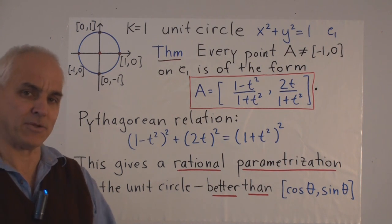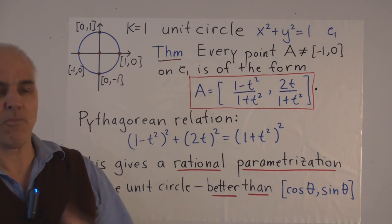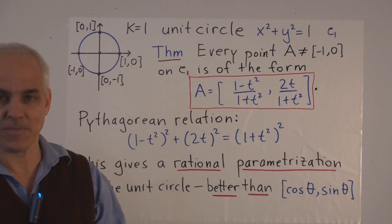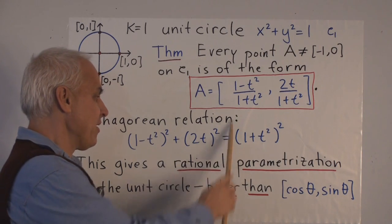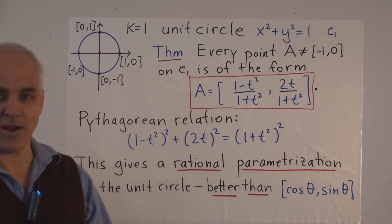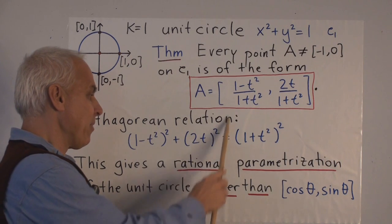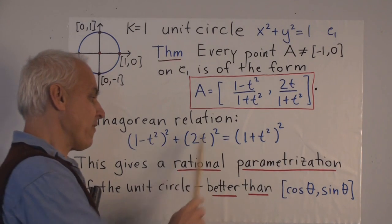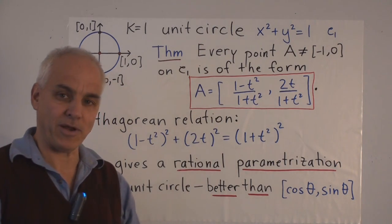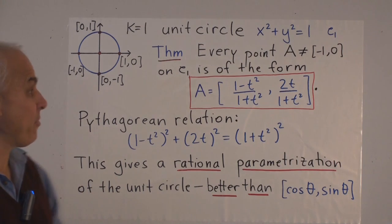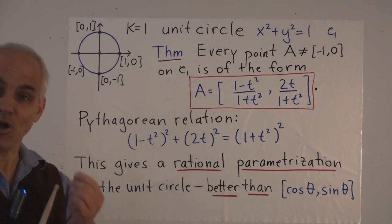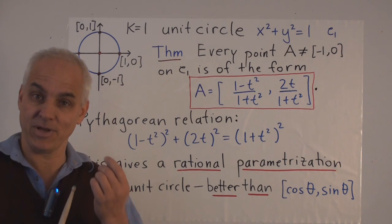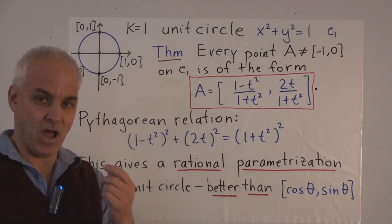Well, you may remember that the 3-4-5 triangle is a right triangle. So 3 this way, 4 this way, 5 hypotenuse—that's a right triangle. That's telling us that 3² + 4² = 5². And if you divide by 5², you get that (3/5)² + (4/5)² = 1. So the point (3/5, 4/5) is also a point on the unit circle, and it comes from a Pythagorean triple. And that's a general kind of phenomenon.